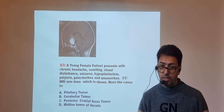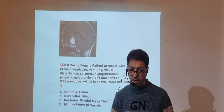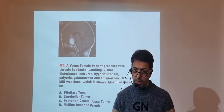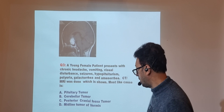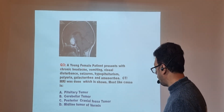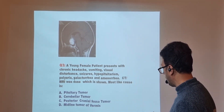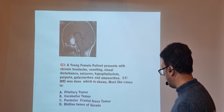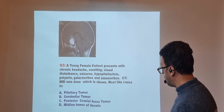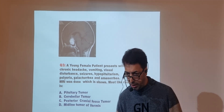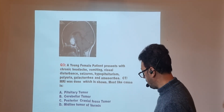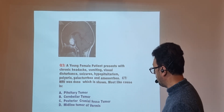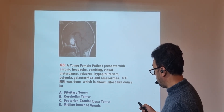The third question is from radiology — a combination of oncology, radiology, and endocrinology. A young female patient presents with chronic headache, vomiting, visual disturbance, seizures, hypopituitarism, polyuria, galactorrhea, and amenorrhea. A contrast MRI is done, which is shown. The options are pituitary tumor, cerebellar tumor, posterior fossa tumor, and midline tumor. The highlighted white area in the image needs to be identified.